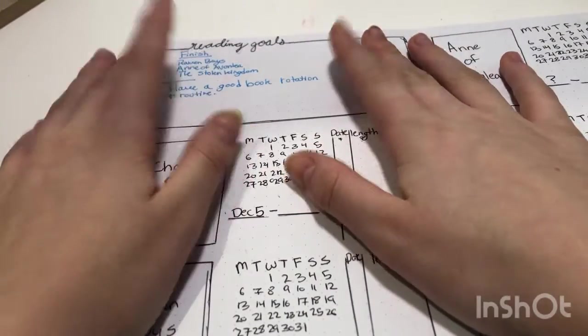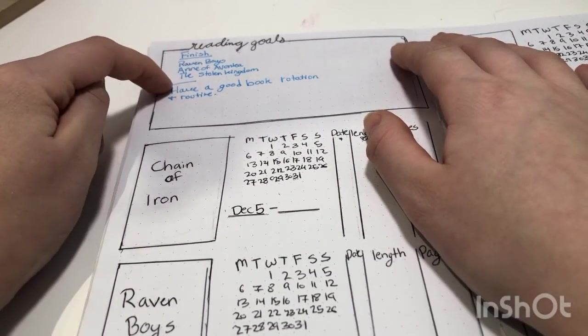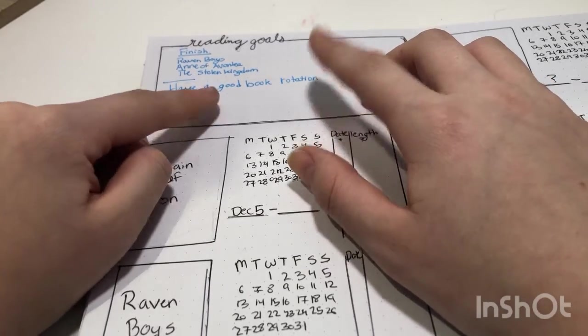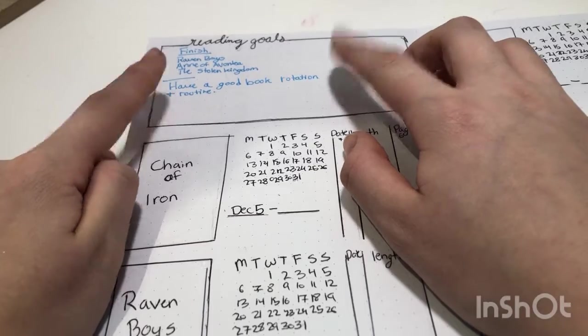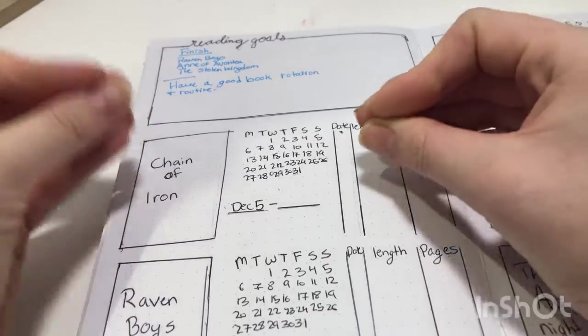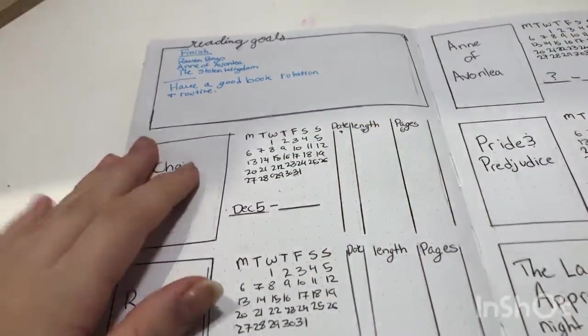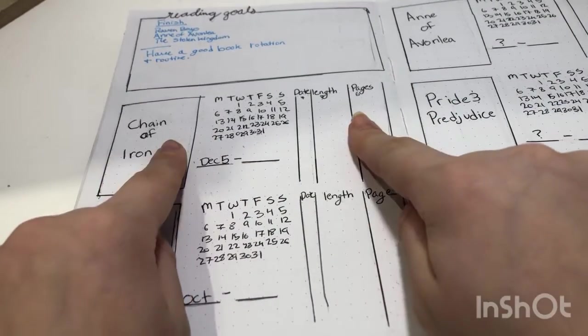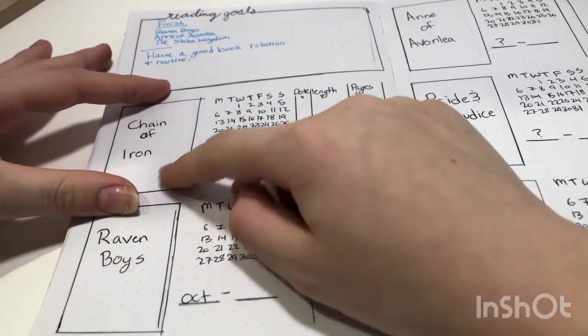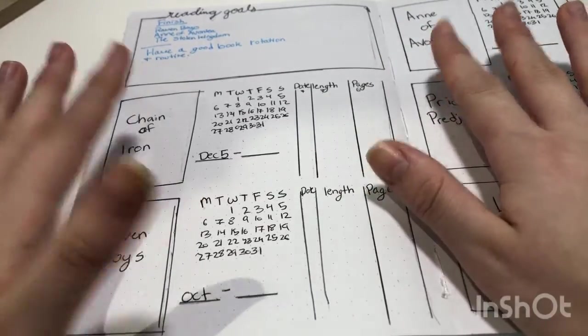So up here, I already have written out some goals. So I want to finish these books and I want to have a good book rotation and routine. So that kind of applies because I read so many books at once to make sure that I get all of them in the rotation and kind of make sure that I'm reading the right amount of each one or kind of seeing where I'm spending most of my time. So each of these, I'm just going to briefly explain it a little bit. So this is the book title. Now you could decorate this with art or something, but because I was short on time, I just decided to do a very simple cover.